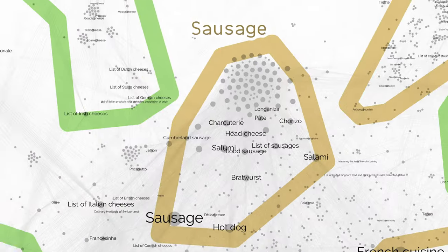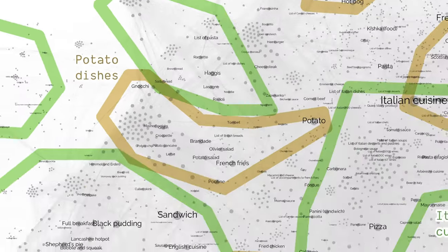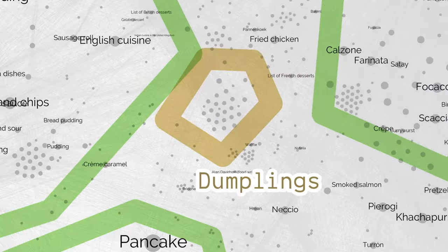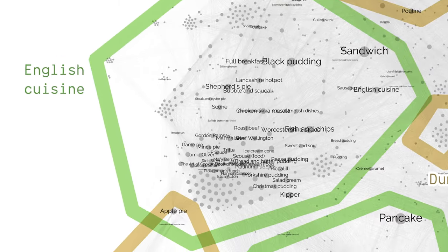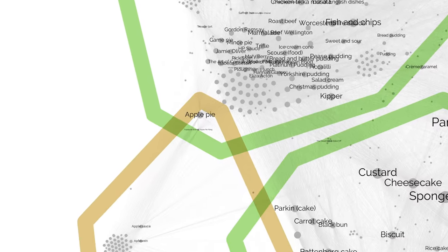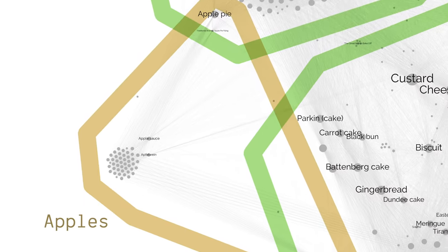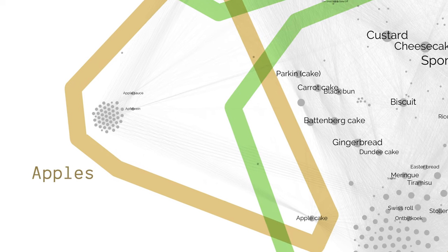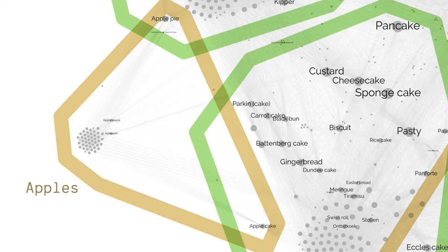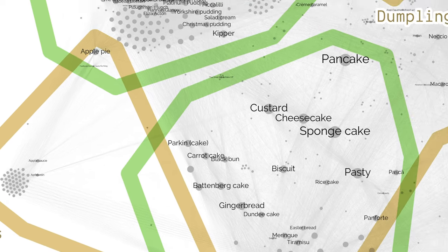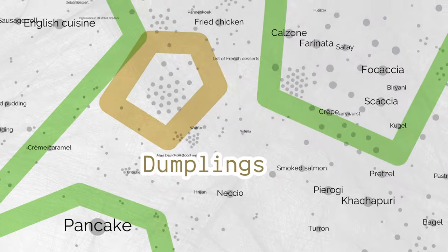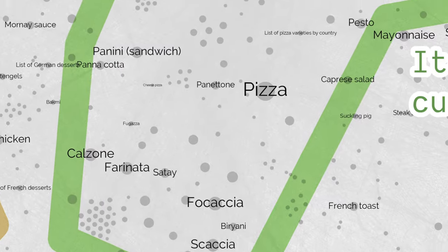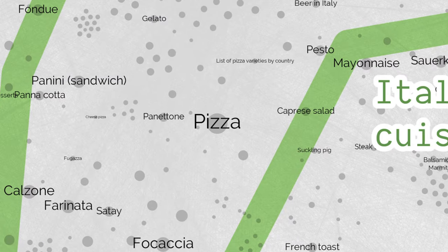Soups, sausage, pasta, potato dishes, and dumplings matter in European cuisine. Sandwiches are important for English cuisine. Apples are a special fruit, with a dedicated set of articles and dedicated dishes, unlike other fruits. Pizza is the most central dish of the map, and so on and so on.